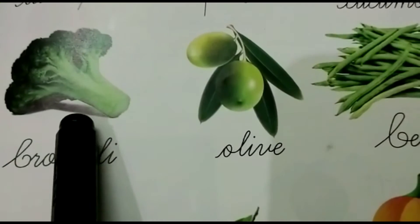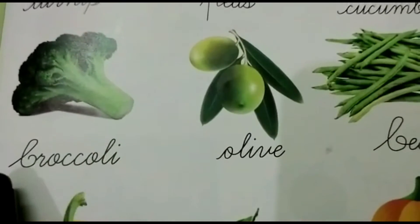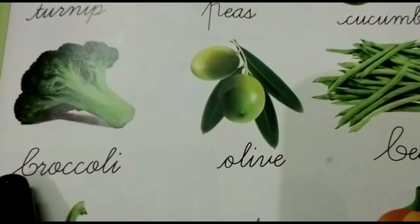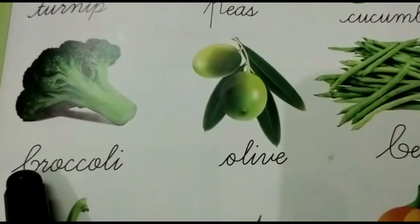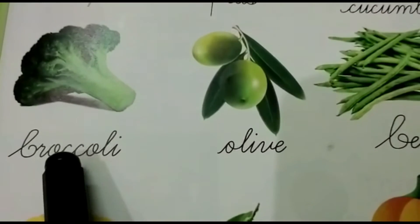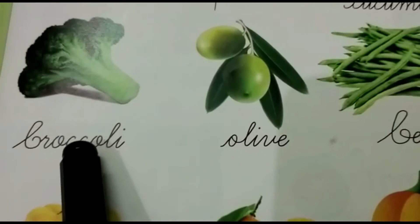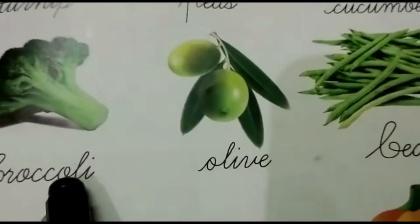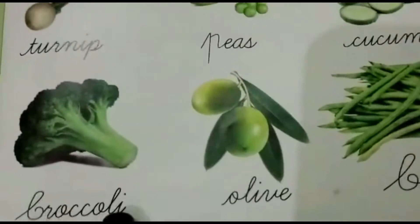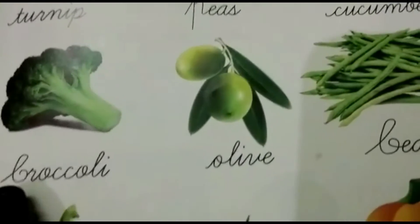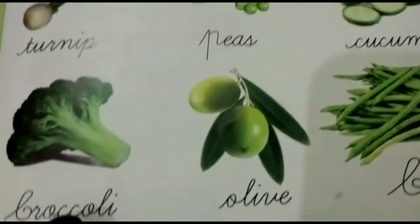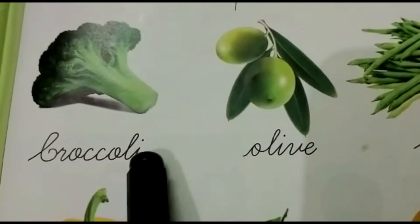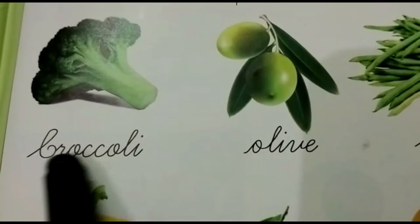Cauliflower — but this one is green color. That is broccoli. B-R-O-C-C-O-L-I. Broccoli.